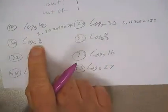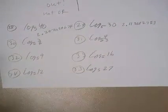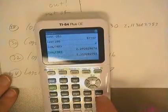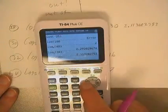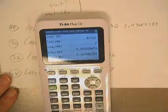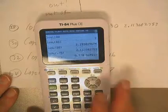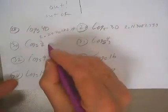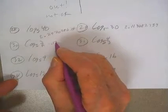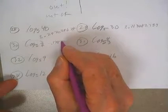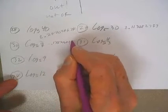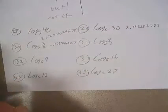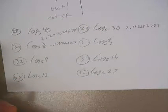And then I want to go down and get this one. So I'm just going to put in 0.75 instead of having to do the fraction three-quarters. This one's negative 0.178746923.